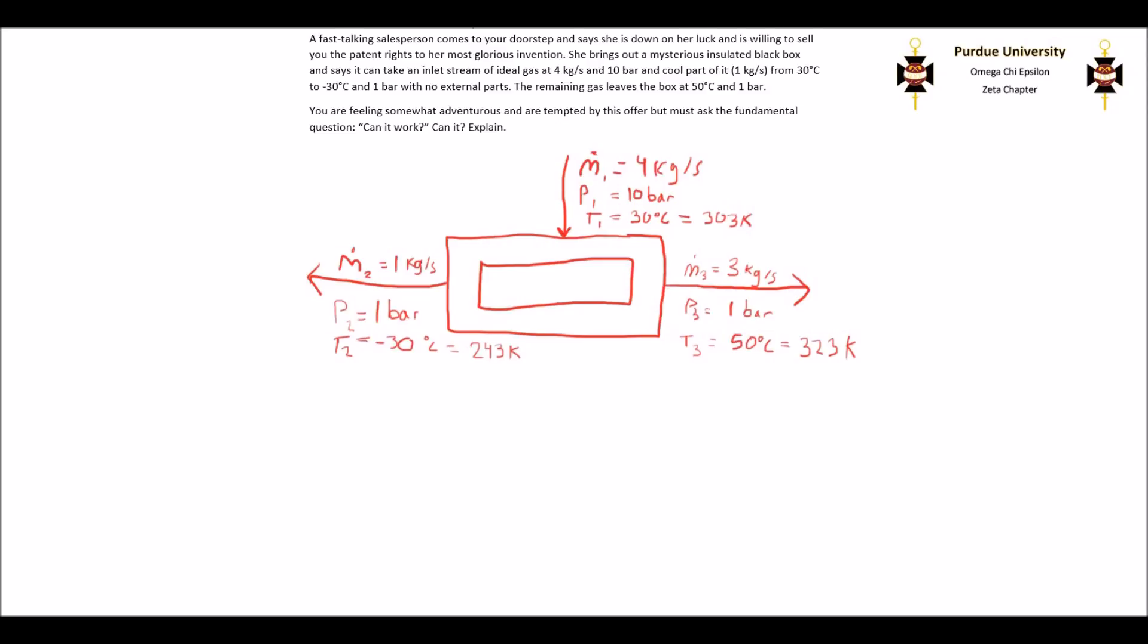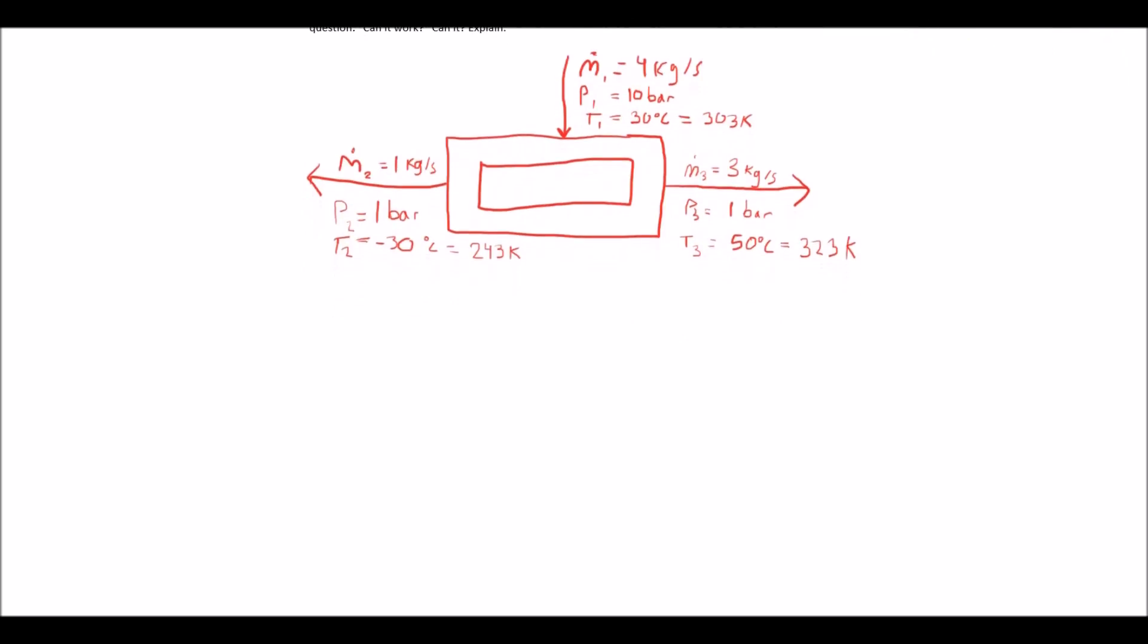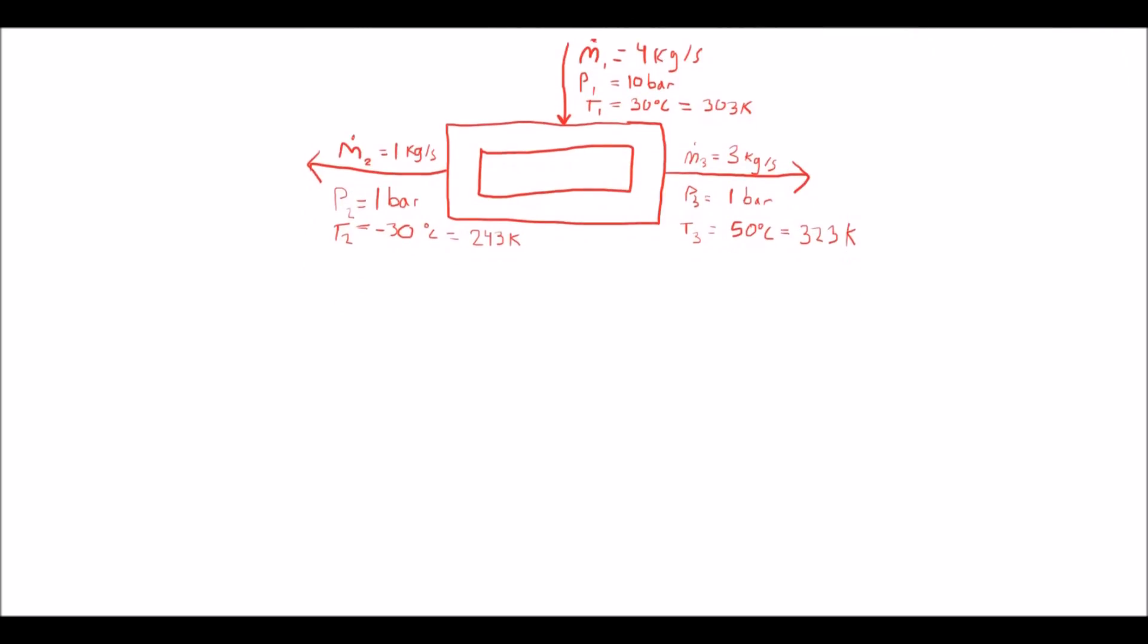We're going to start with the open system first law energy balance. This problem is a steady state so everything on the left side is going to go to zero. It's said in the problem statement that the box is insulated so there's going to be no Q. There's no work being done in the box so work will go to zero as well. And there's no change in kinetic or potential energy.